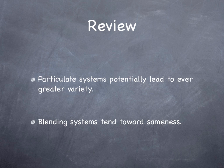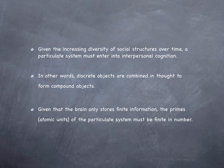I'd like to begin with a review of the last class. Last time, we covered how particulate systems potentially lead to greater diversity, whereas blending systems tend toward sameness. Given the increasing diversity of social structures over time, a particulate system must enter into interpersonal cognition. The same phenomenon was observed in biology: in evolutionary branching, you find greater diversity over time, just the opposite of what you would find in a blending system.